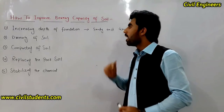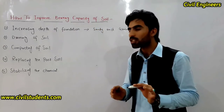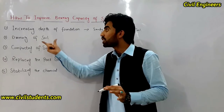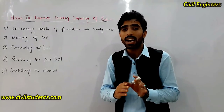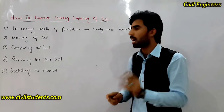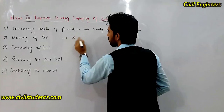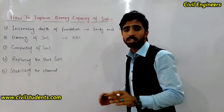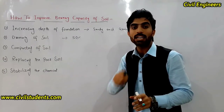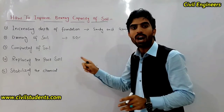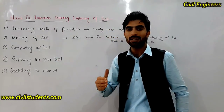The second method is draining of soil. When we want to improve the bearing capacity of soil, we drain the soil, because when water is present in the soil it can reduce the bearing capacity by up to 50 percent. So we have to drain the water from the soil using pipes.